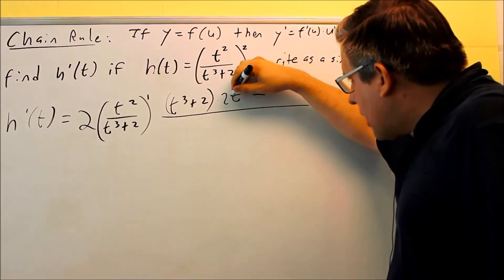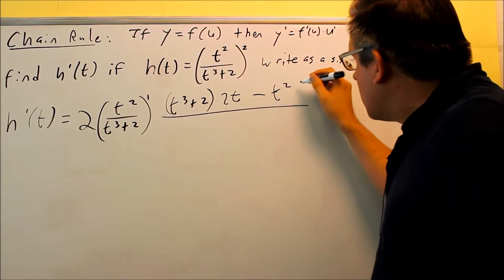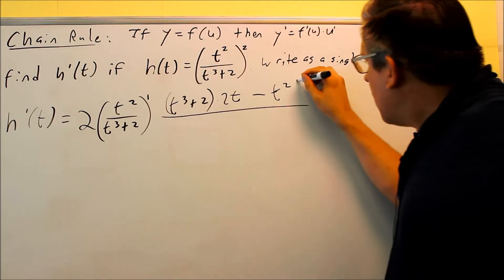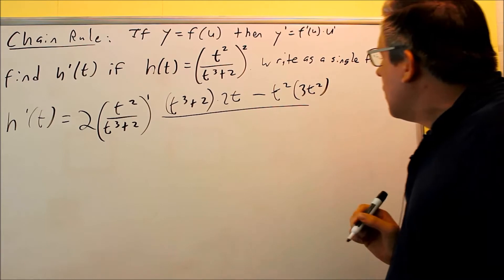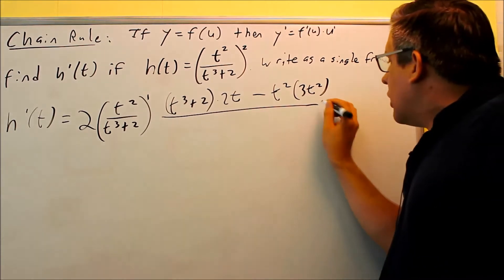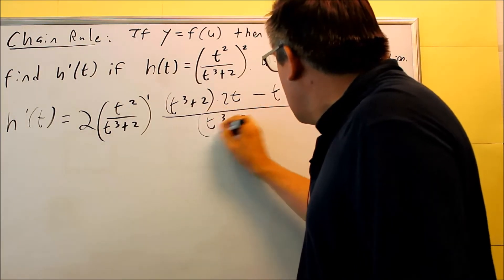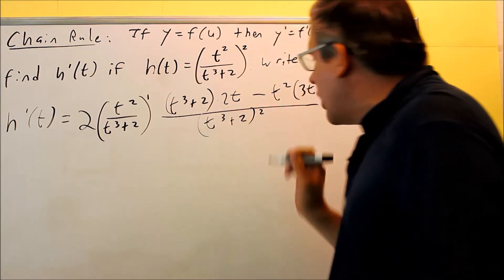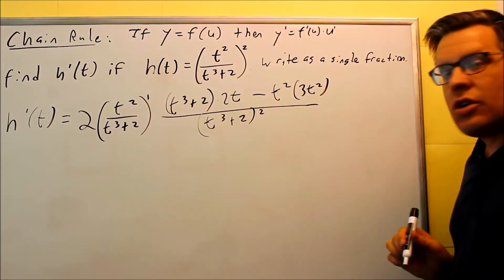Minus, don't forget there's always a minus sign when you do quotient rule, minus the top thing, t squared, times the derivative of the bottom. Okay, the derivative of the bottom would be 3t squared. And that would be it, over the bottom squared. And this, I definitely don't want to multiply that out, because I notice I have another one over here, t cubed plus 2.